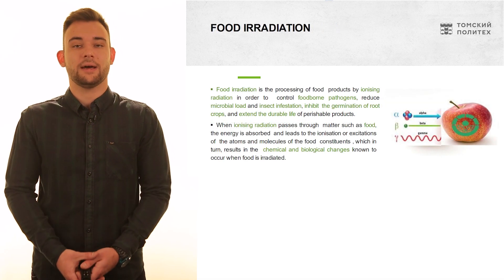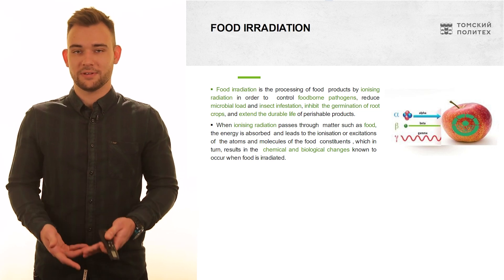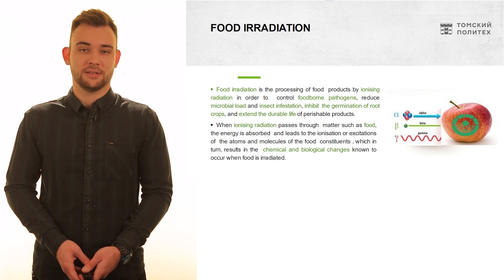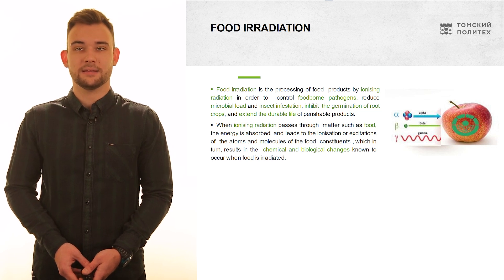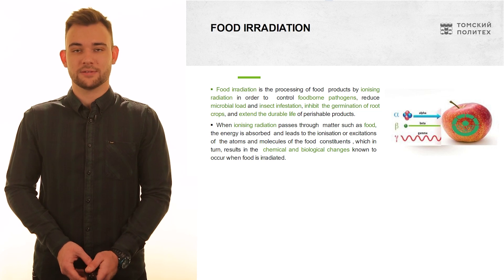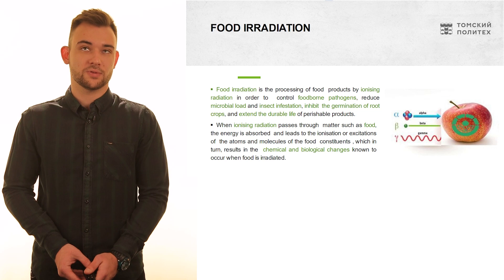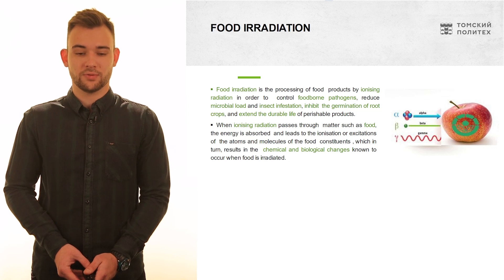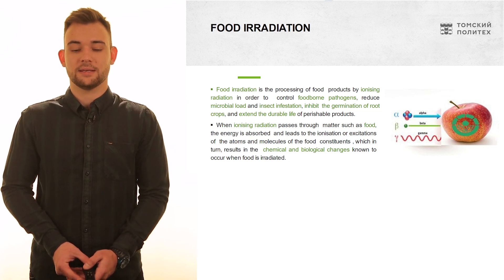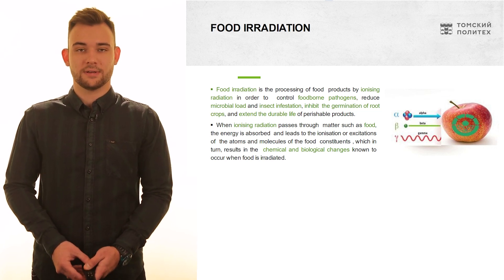The next broad application is food irradiation. Food irradiation is when food is irradiated with ionizing radiation and its structure is changed. It is done for reasons such as controlling foodborne pathogens, reducing microbial load, controlling insect infestation, and inhibiting the germination of root crops.